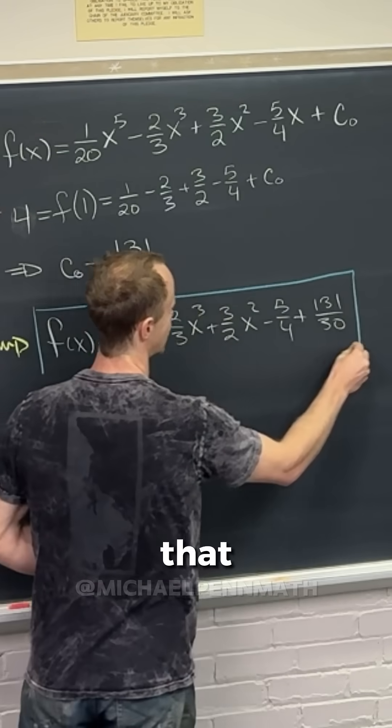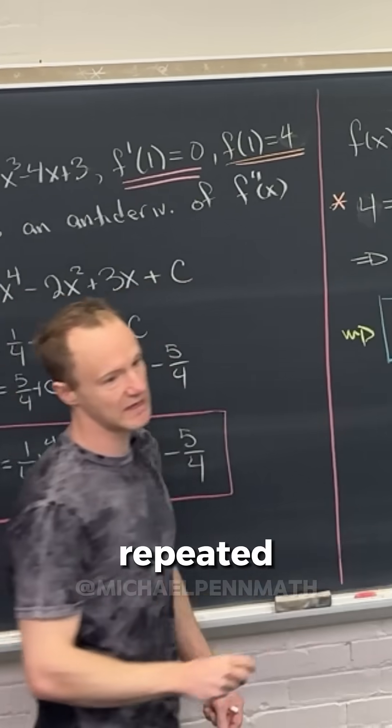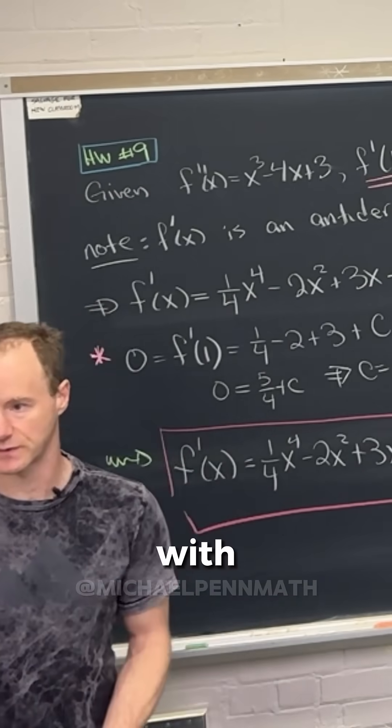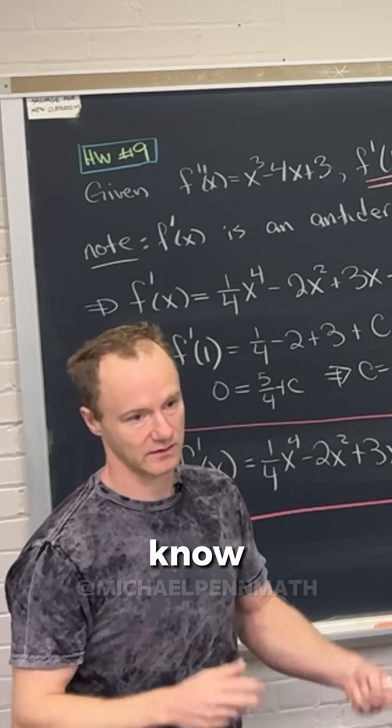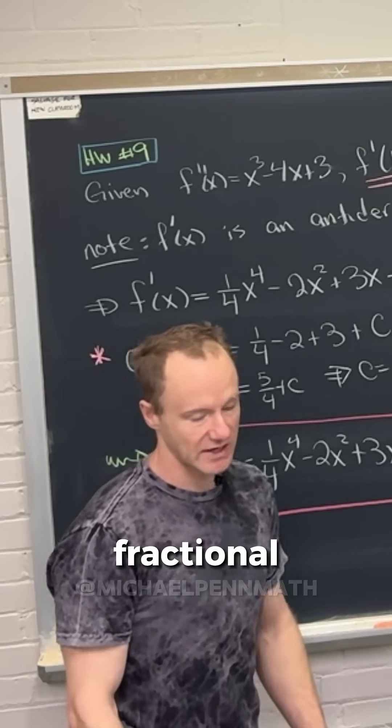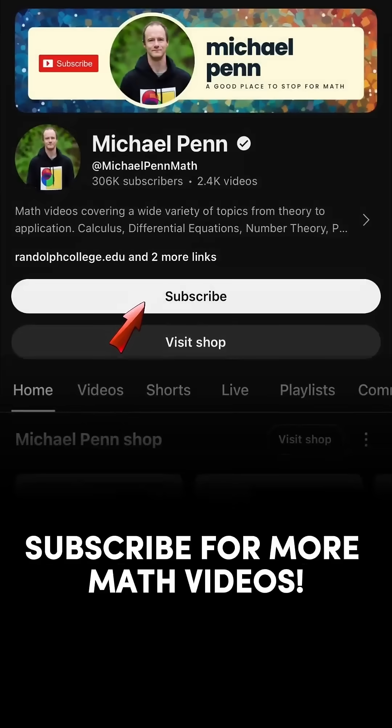So notice that when you take repeated derivatives, sorry, antiderivatives with the power rule, you like continue to divide by these things. So it becomes extremely fractional.